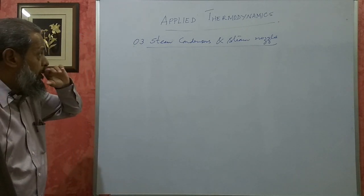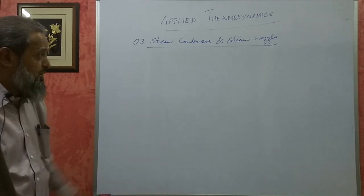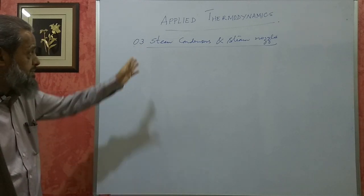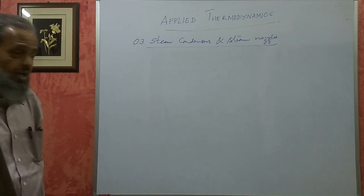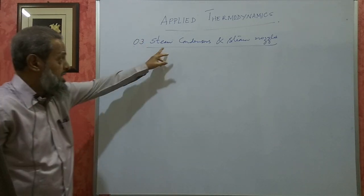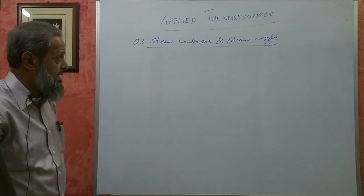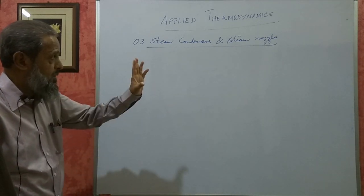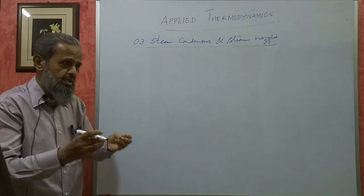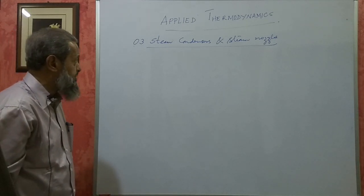Here there are 2 different things used in steam power plants - steam condensers and steam nozzles. They are in one unit. In steam condensers you will get only theory. In steam nozzles you can get both theory as well as numericals.